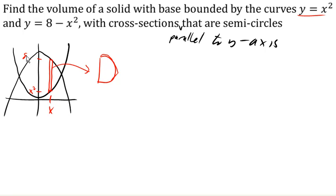And so the difference between them, this distance here will be 8 minus x squared minus x squared, right? The difference between the functions. So 8 minus 2x squared. And that length corresponds with this length here.